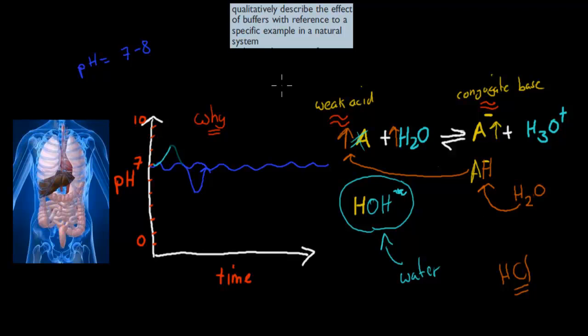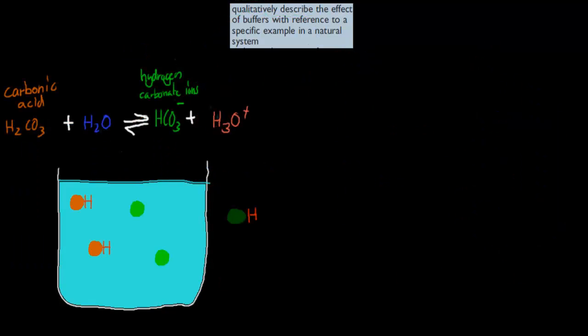The dot point itself is very similar to this. What I just described was a general idea. The A stands for acid, so HA would be the acid with its proton, and A- would be conjugate base. But now I'm going to go over an actual example. The dot point says qualitatively describe the effect of buffers with reference to specific examples in a natural ecosystem. The natural system we're going to talk about is inside our body.